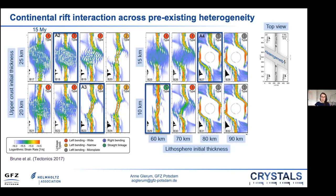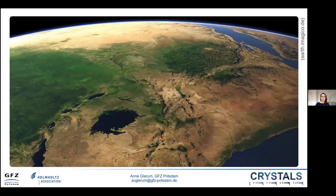Taking all this together, we now know that oceanic microplates rotate fast through edge-driven kinematics and form for specific geometries of overlap and offset. Continental rifts interact differently depending on offset and crustal strength, and under particular strength heterogeneity they can form rotating continental microplates. Armed with this knowledge, we now zoom in on the Victoria continental microplate in East Africa, with the Red Sea and Gulf of Aden visible in this image.